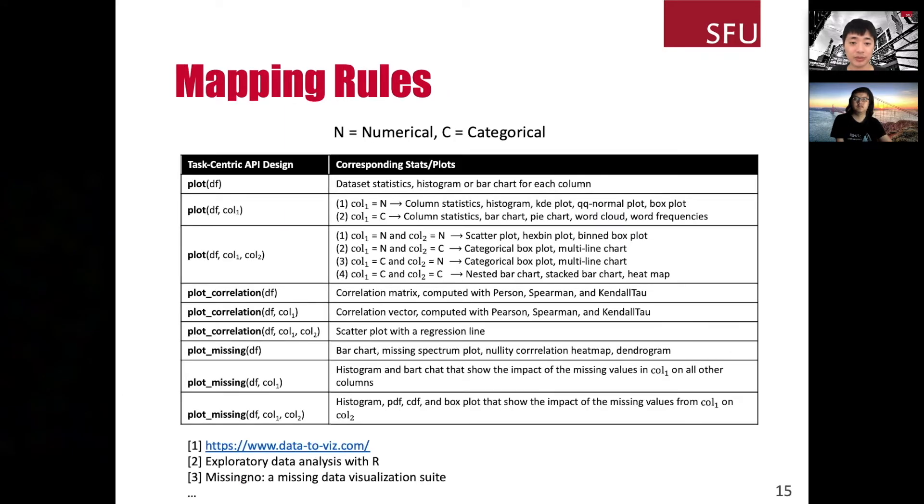Let's talk about mapping rules first. As shown in the demo, the visualization displayed by the plotting function depends on the function name as well as the type of the column. For example, for a plot_df(column1) function, we will show a histogram and a KDE plot if the column is numeric. On the other hand, if the column is categorical, we show the bar chart and pie chart. The mapping rules are acquired from textbooks, blogs and other open source projects. Since our library is open sourced on GitHub, we also get feedback from the community for adding new mapping rules.